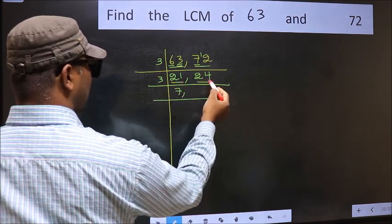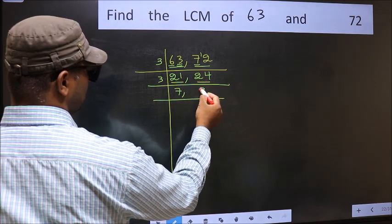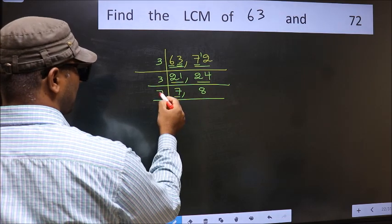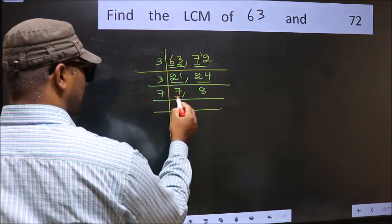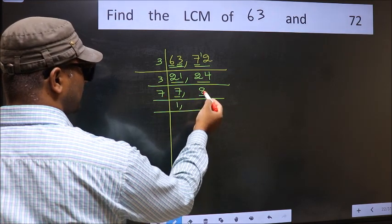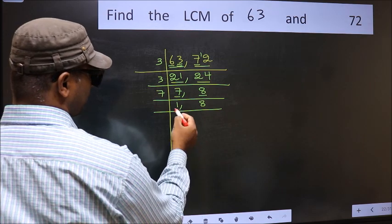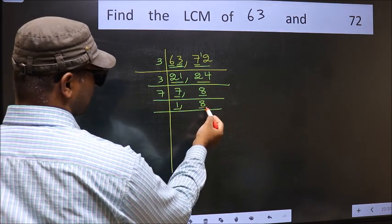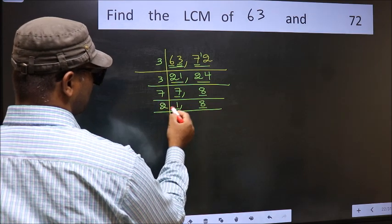The other number is 24. When do we get 24 in the 3 times table? 3 times 8 is 24. Now we have 7, which is a prime number — 7 times 1 is 7. The other number 8 is not divisible by 7, so we write it down as it is. We got 1 here, so focus on the next number, 8. 2 times 4 is 8.